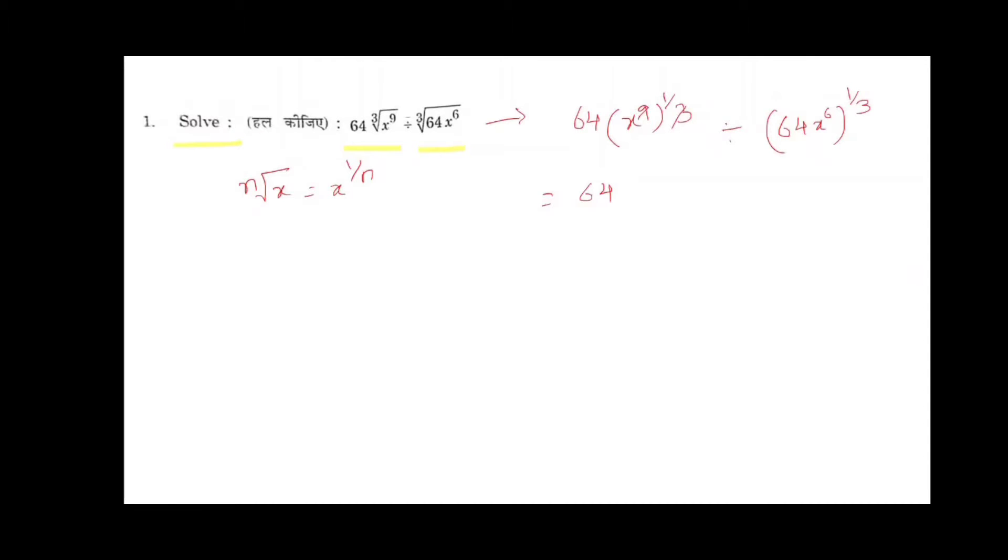Here 3 times 3 cancel because x power m whole power n equals x power mn. This is a formula. In the same way, in the next term also, 3 times 2 is 6.